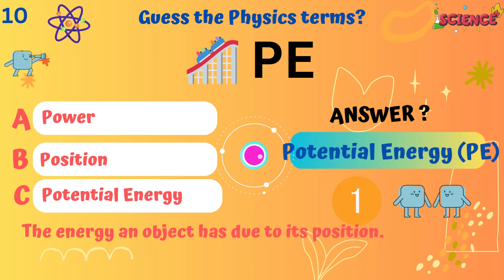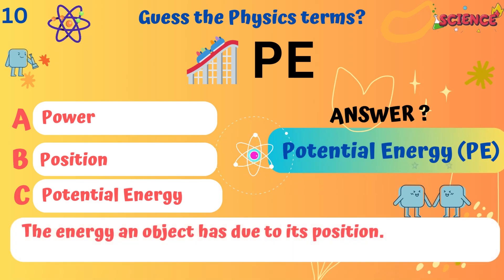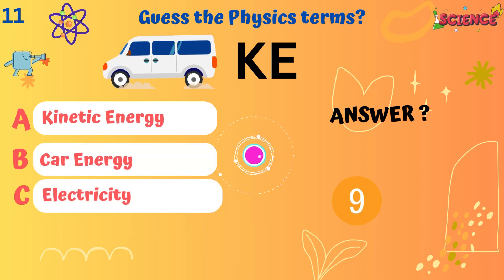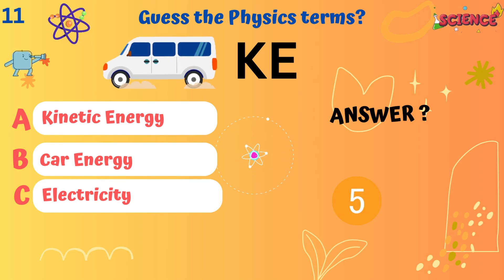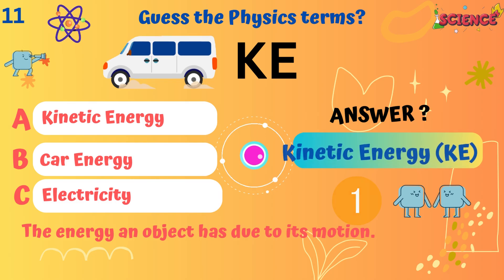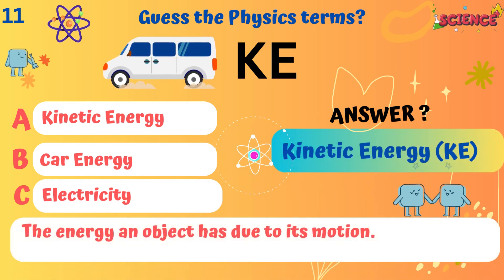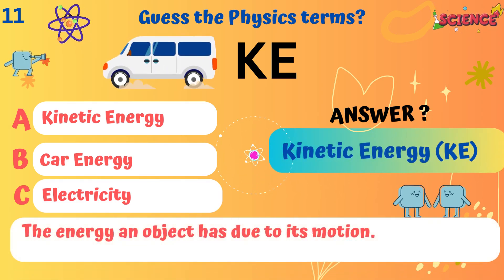Potential energy. The energy an object has due to its position. Energy. The energy an object has due to its motion.